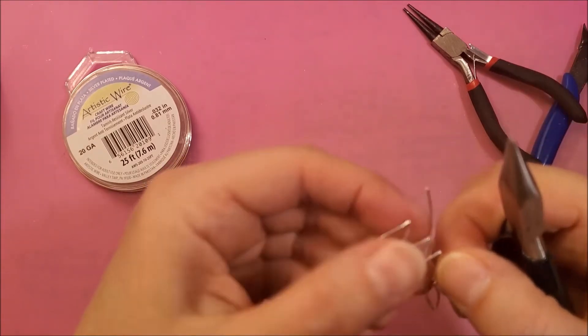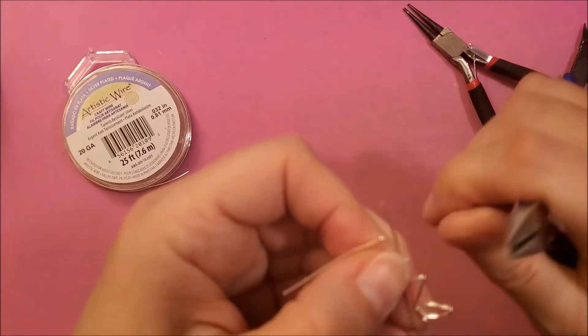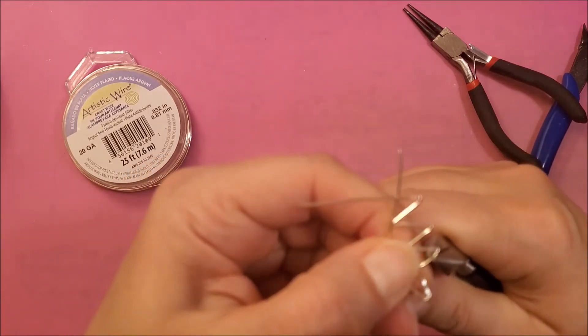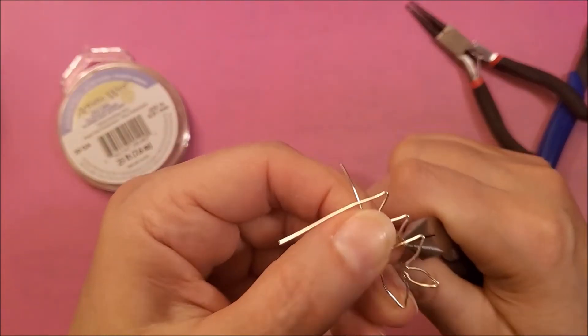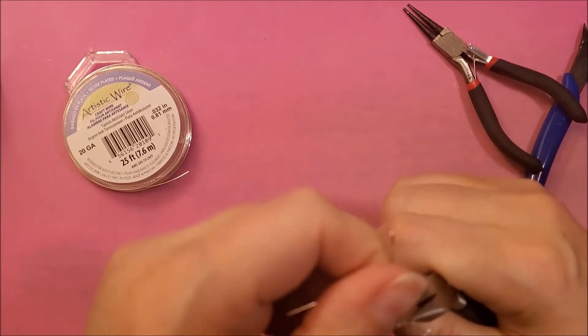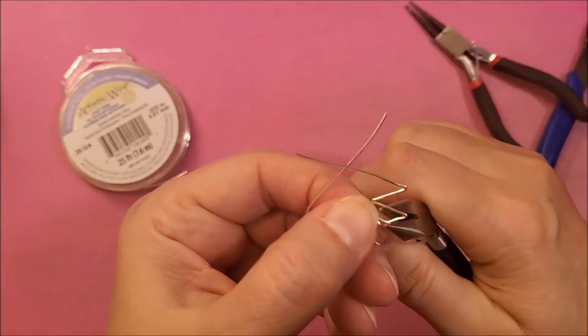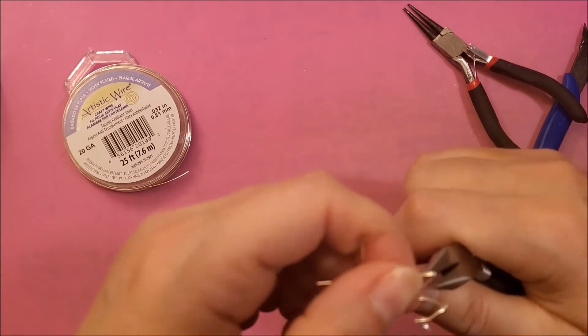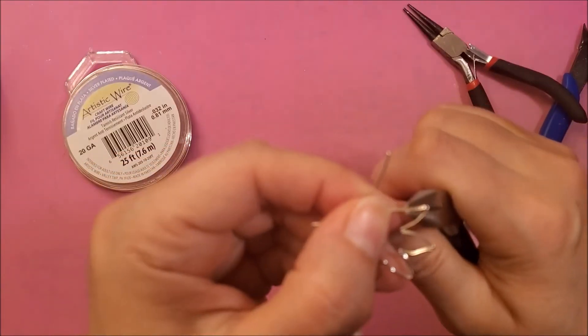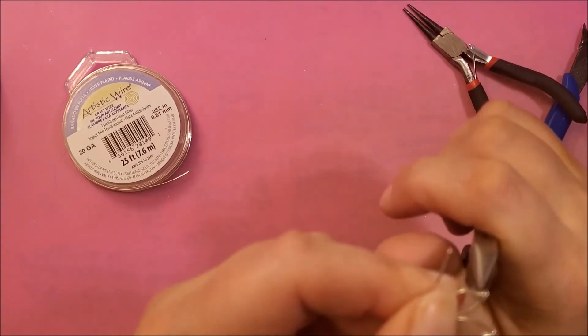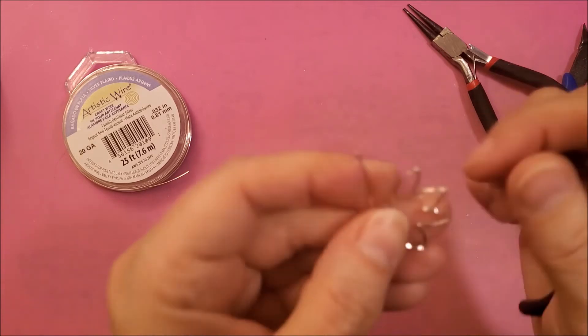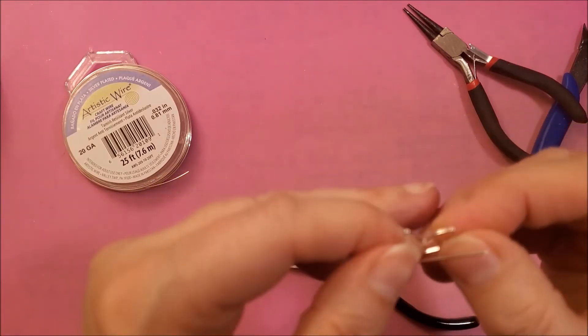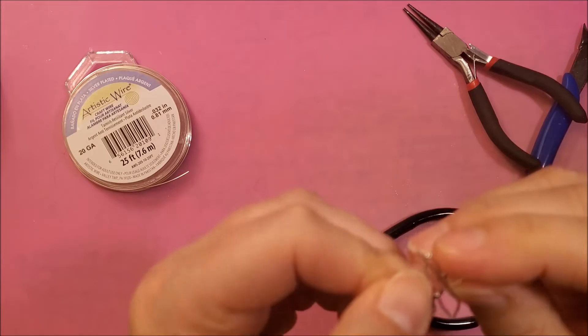Take your round nose pliers and then you can just press on each one and that'll just open them up a bit more. Okay so you should have five points on top and then four points on the bottom.